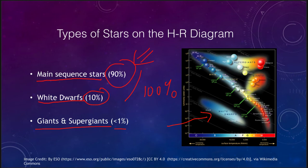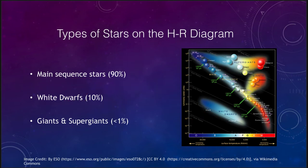However, the giants and supergiants are the ones we can see over vast distances. They are so large and so bright that we can see them even over very great distances. So let's go ahead and plot an HR diagram for ourselves.